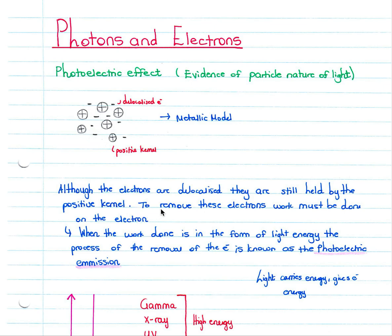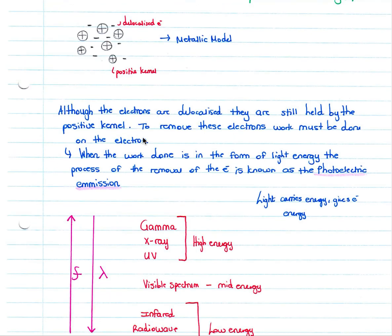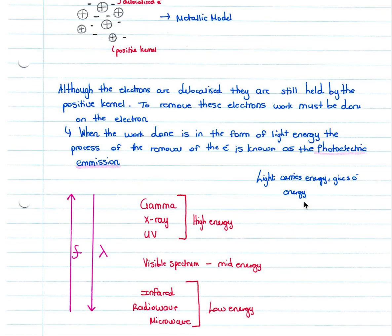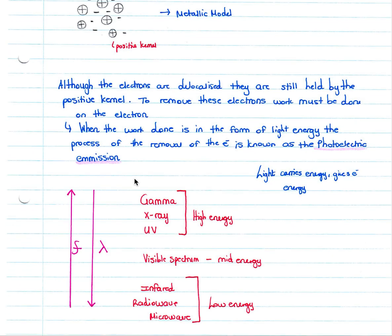To remove these electrons, work must be done on the electron. When the work is done in the form of light energy — so if we shine a light onto our metal — we do work on the electrons. The process of removal of the electron is known as photoelectric emission. So light carries energy and gives electrons energy, which leads to photoelectric emission.